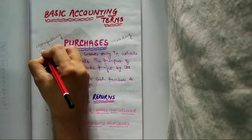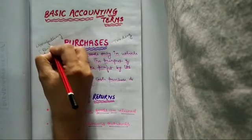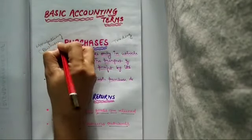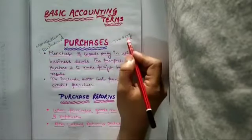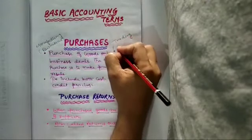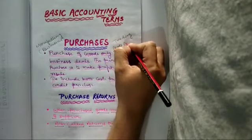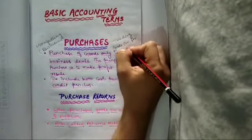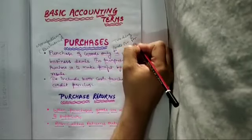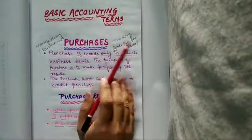So manufacturing concern ke liye purchases joh hooga woh raw material ke liye ga, and for trading business or concerns ke liye goods purchase for resale. That is called the purchase for trading concern.